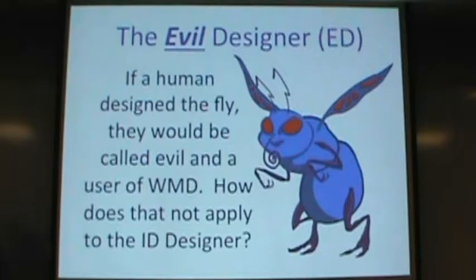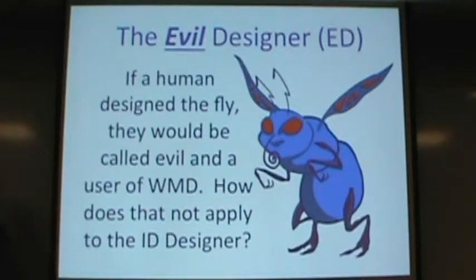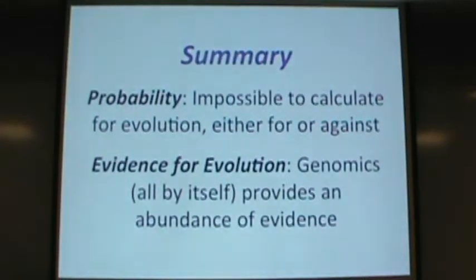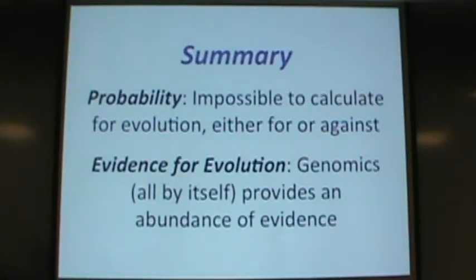As Mark Twain noted, if there's an intelligent designer, maybe he's evil — flies are so good at spreading infection, going from a child with infected eyes through dung and spreading disease. If a human designed and released such a fly, we'd probably say he created a weapon of mass destruction and put him in jail. So in summary: probability can't be calculated because we don't know the process, and the DNA evidence for evolution is very convincing and powerful.